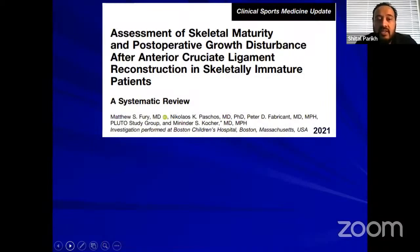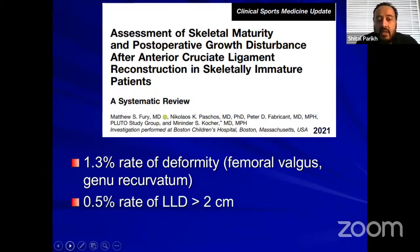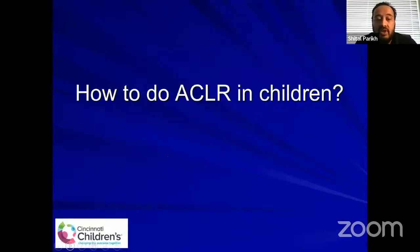When we looked at the systematic review of growth disturbances after ACL in immature patients, the rate of deformity is not significant — 1.3%, mainly valgus and genu recurvatum. And it can stimulate the growth plate in very young patients, so the operated side can actually have a limb length discrepancy of more than two centimeters longer than the other side, which might require some intervention.